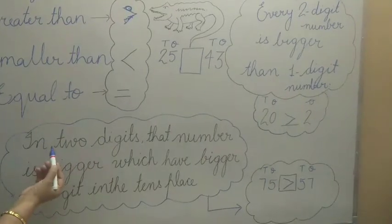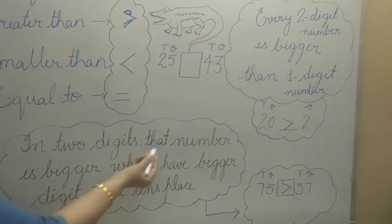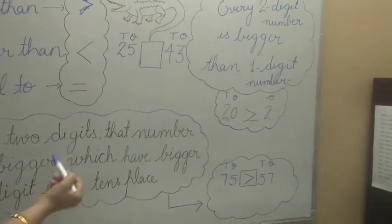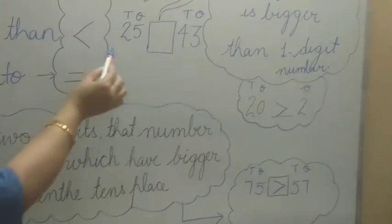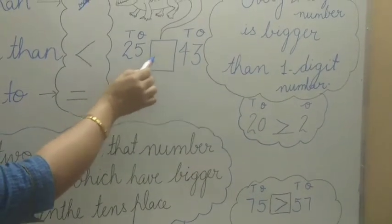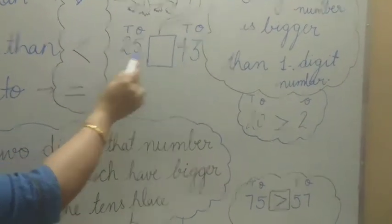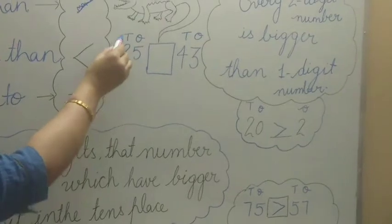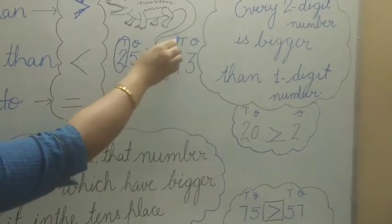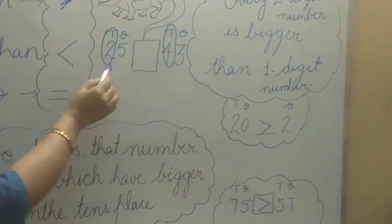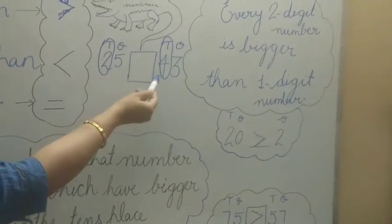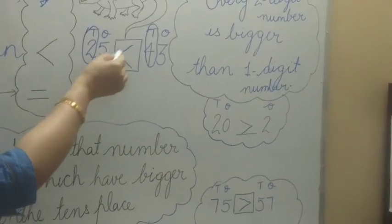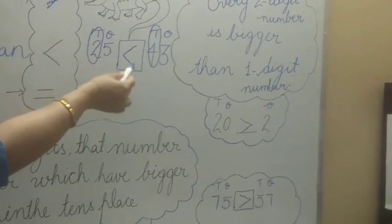Now, what is the second rule? When both numbers have two digits, the number with the bigger digit in the tens place is bigger. For example, we have 25 and 43 — both have two digits. We compare them by checking their tens place: 2 versus 4. Four is bigger, so we put the symbol opening toward 43. The crocodile's mouth opens to the greater side.